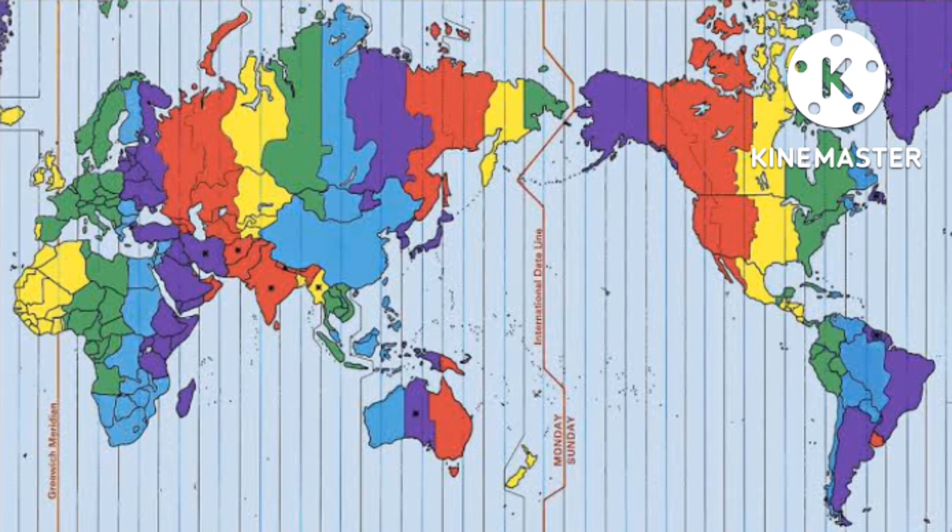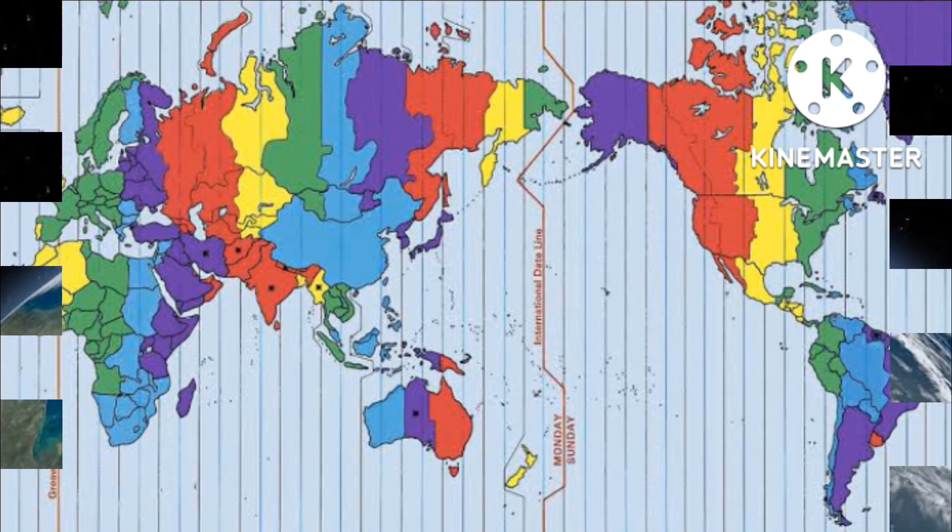Halfway around the world at 180 degrees longitude is the international date line. The international date line functions as a line of demarcation separating two consecutive calendar dates. Cross to the west and it's one day later, cross back and we have gone back in time.